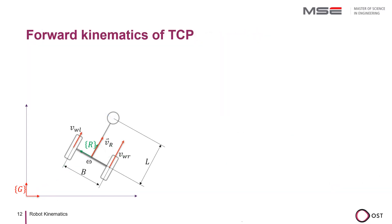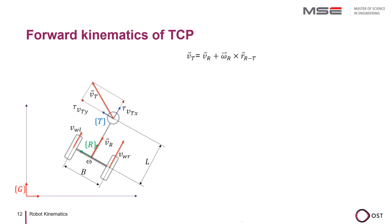We have previously assumed that the robot coordinate system lies between the wheels of the mobile robot, which is indeed the most common assumption. But if we want to grasp something with our gripper, it is more appropriate to define a TCP at the gripping point, to which we give the coordinate system T. At this point, the velocity vector is no longer restricted by the rolling behavior of the wheels and can reach any value in any direction. To calculate this velocity, we need some relative kinematics. The Vt vector equals the velocity vector of the robot Vr plus the cross product between Omega_R and the connecting vector between coordinate systems R and T.